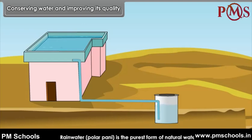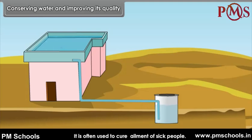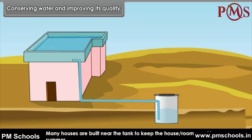Rainwater is the purest form of natural water. It is often used to cure ailments of sick people. Many houses are built near the tank to keep the house or rooms cool in summer.